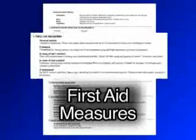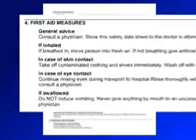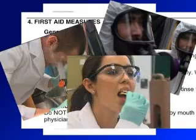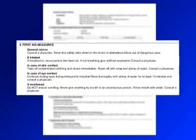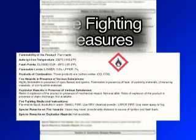Section 4: First Aid Measures. Includes a description of necessary measures subdivided according to the different routes of exposure — that is, inhalation, skin and eye contact, and ingestion — the most important symptoms and effects both acute and delayed, and an indication of immediate medical attention and special treatment needed. Section 5: Firefighting Measures. Lists appropriate and inappropriate extinguishing techniques and equipment for the chemical, specific hazards arising from the chemical such as the nature of any hazardous combustion products, and any and all special protective equipment and precautions for firefighters.